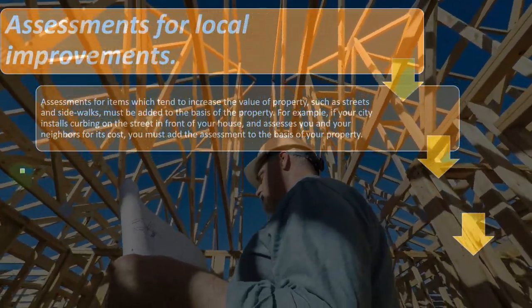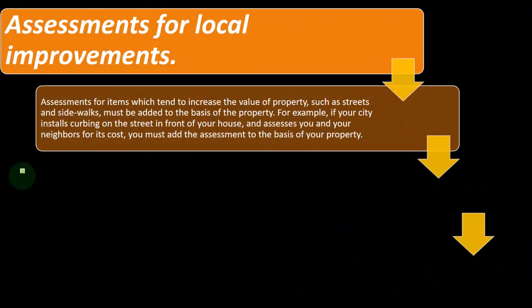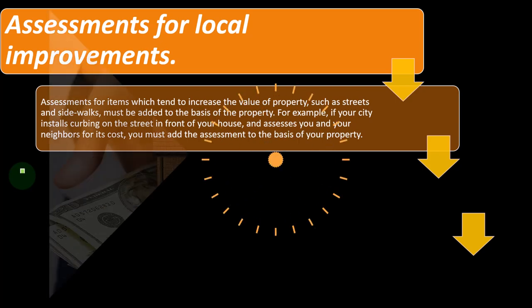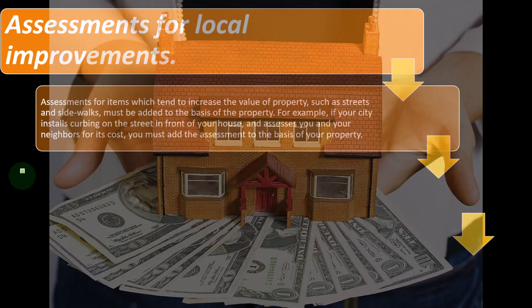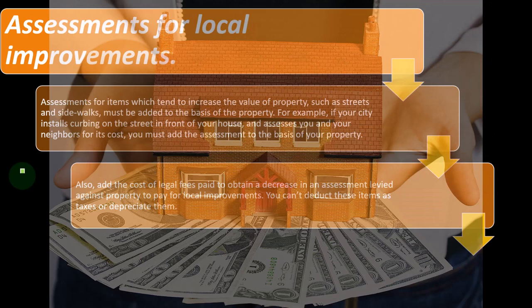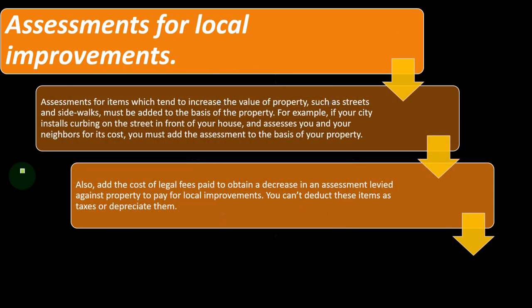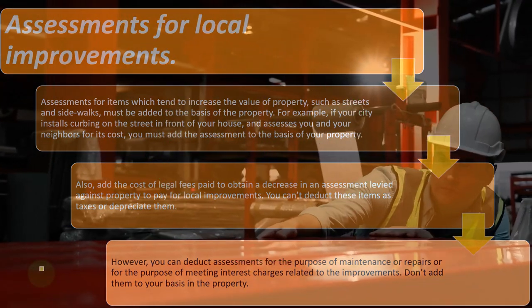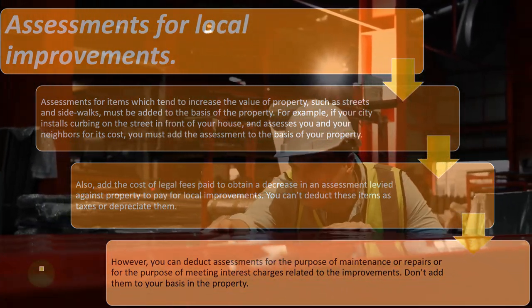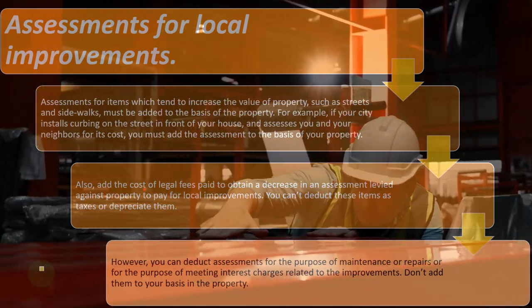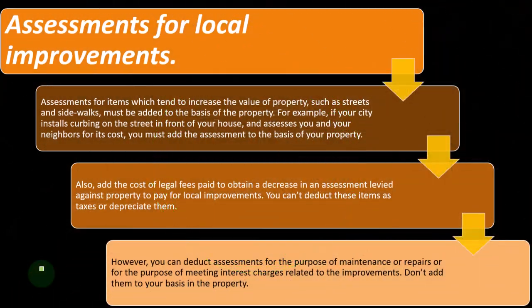Assessments for local improvements that tend to increase property value — such as streets and sidewalks — must be added to the basis of the property. For example, if your city installs curbing on the street in front of your house and assesses you for its cost, you must add that assessment to the basis of your property. You can't deduct these items as taxes or depreciate them separately. However, you can deduct assessments for the purpose of maintenance, repairs, or meeting interest charges related to the improvements.